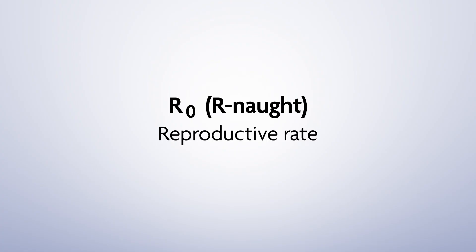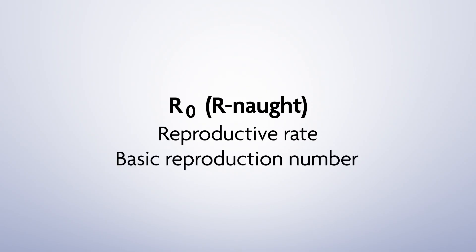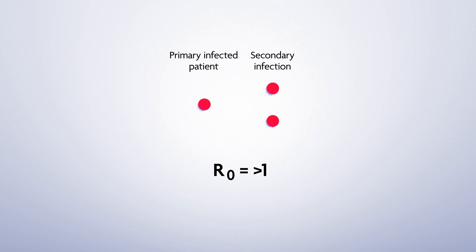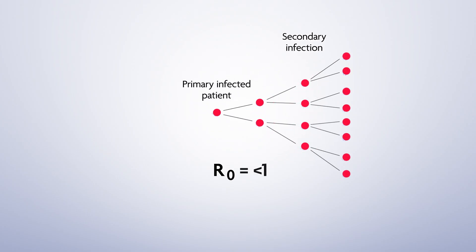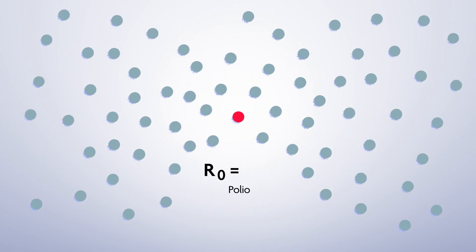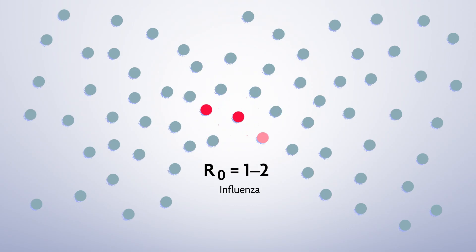Measles is probably the most infectious pathogen we have to deal with in terms of person-to-person spread. One marker of this is the R0, or basic reproduction number, which indicates how many secondary infections arise in a susceptible population from one infected patient. If secondary cases exceed one, the outbreak expands; if less than one, it contracts. Polio has an R0 of 5–6, the common cold 2–3, influenza approximately 1–2 — compared to measles, which has an R0 of 12 to 18.